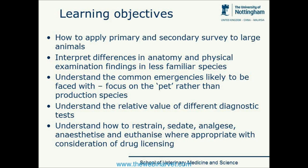Hopefully we can interpret some of the differences in anatomy and physical exam findings in other species that are likely to be less familiar to you. We'll think about common emergencies we're likely to be faced with, focusing on the pet rather than production species, though I'm happy to answer questions on specific production species at the end. We'll consider the relative value of different diagnostic tests and how to restrain, sedate, analgese, anaesthetise, and euthanise where appropriate, and think about drug licensing which is more important in food producing animals.